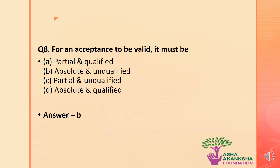The next question is: for an acceptance to be valid, it must be which of the following? Options are: A) Partial and qualified, B) Absolute and unqualified, C) Partial and unqualified, or D) Absolute and qualified. The correct answer is option B — for an acceptance to be valid, it must be absolute and unqualified.